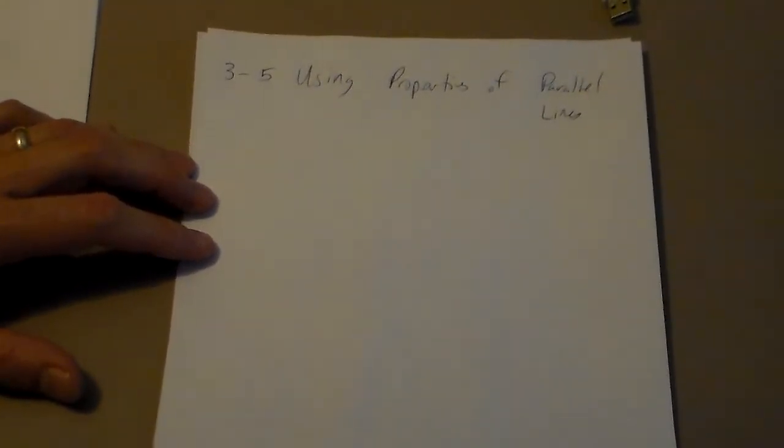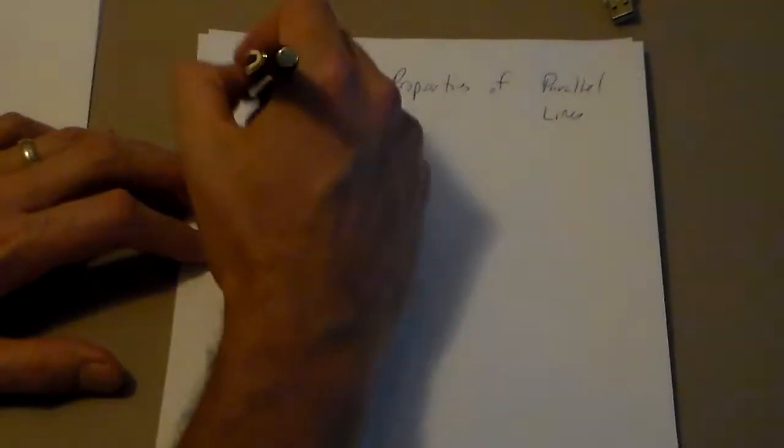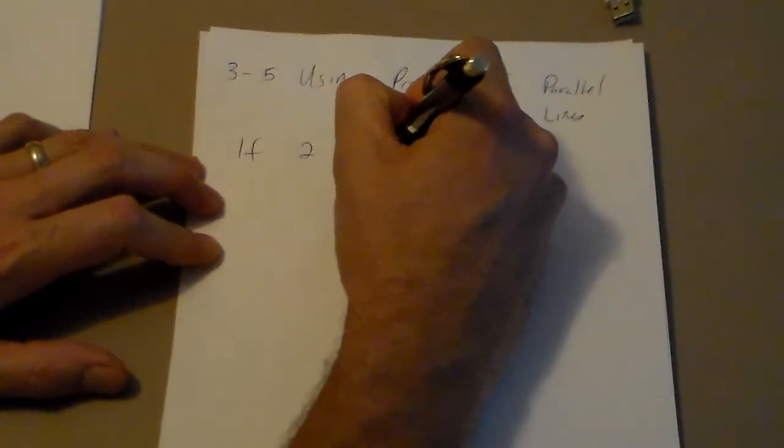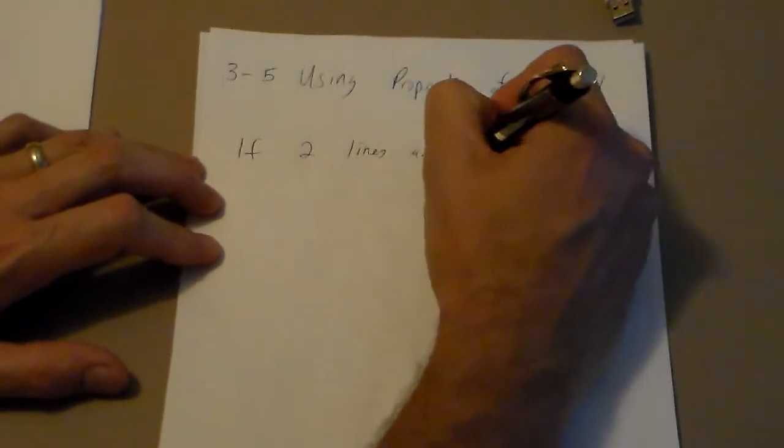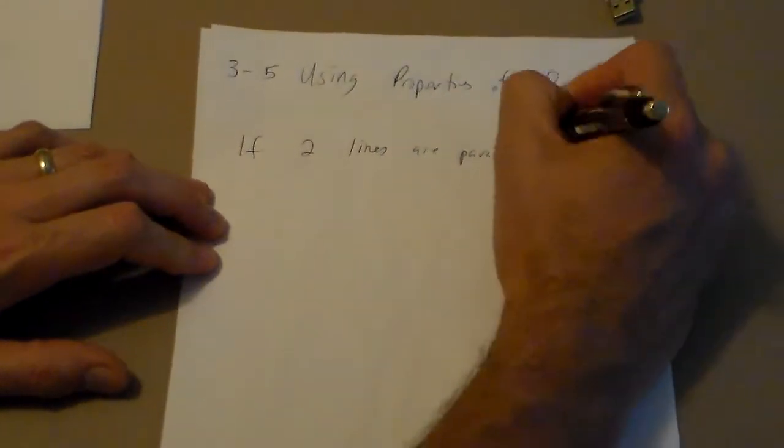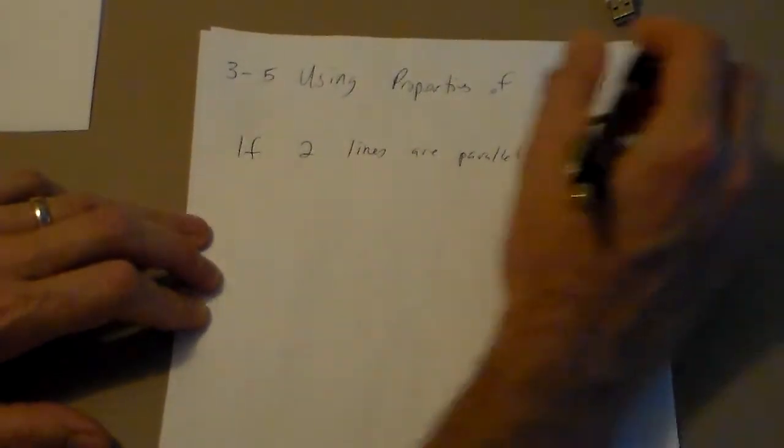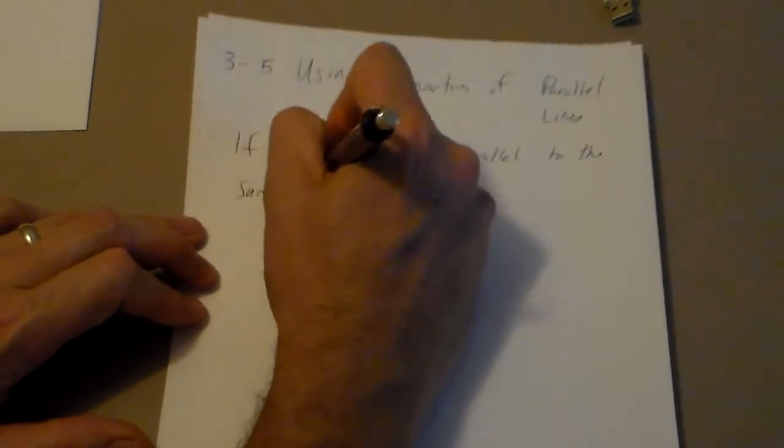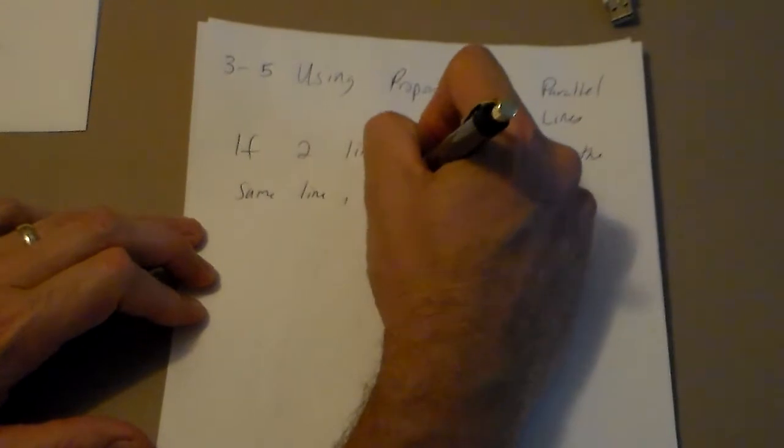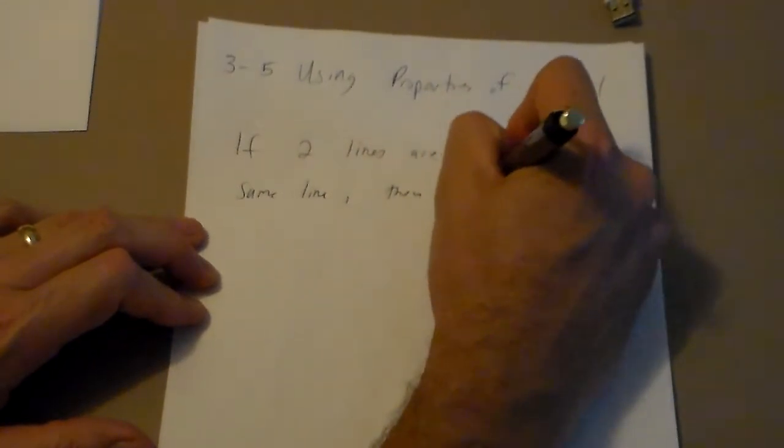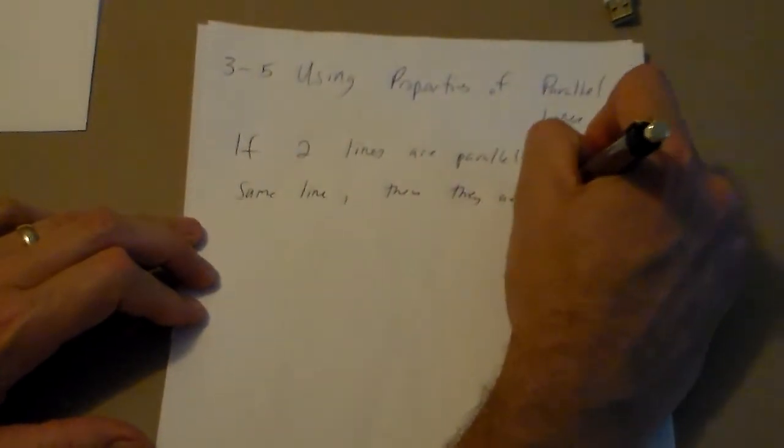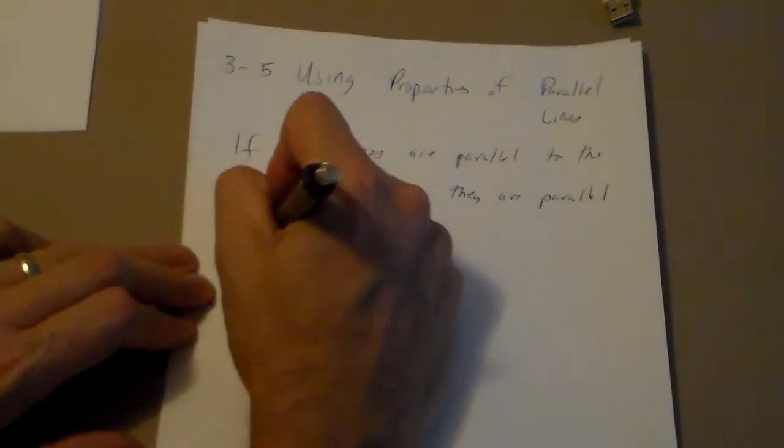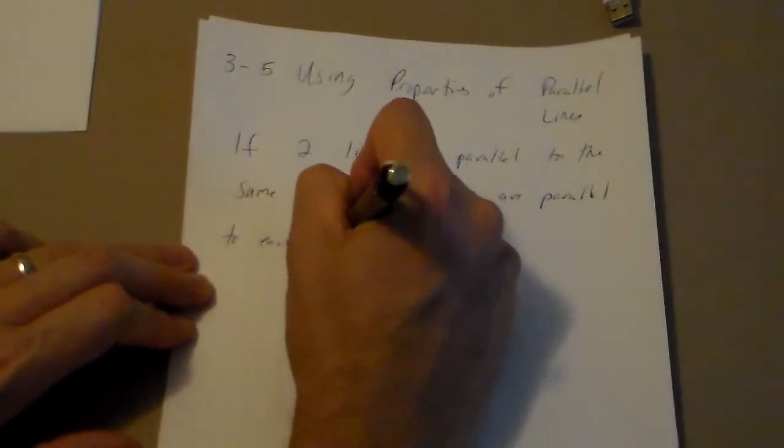I'm not going to write it down because it means nothing. What I am going to write is, if two lines are parallel to the same line, then they are parallel to each other.